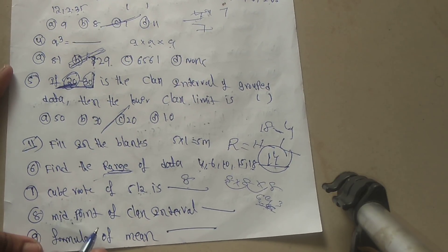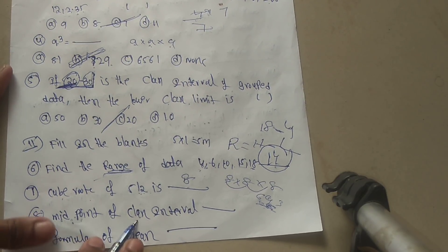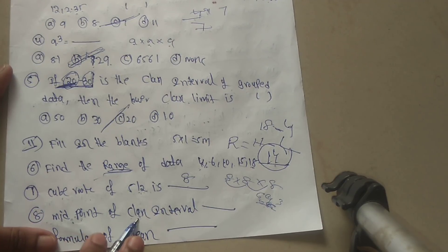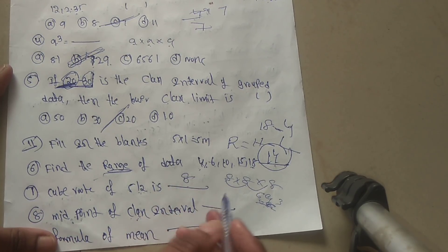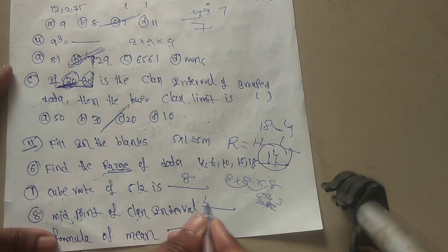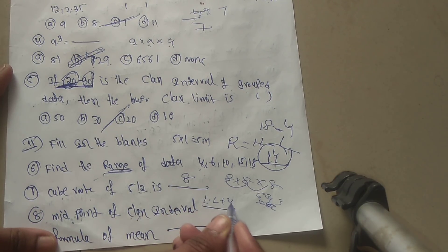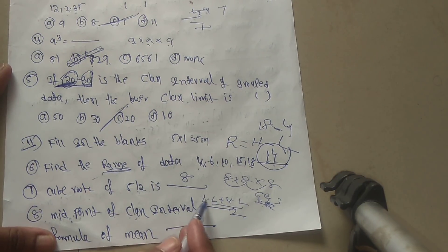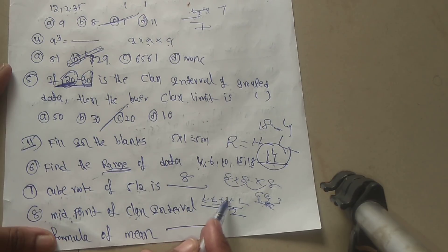Question 8: midpoint of a class interval. The formula is: midpoint = (lower limit + upper limit) divided by 2.